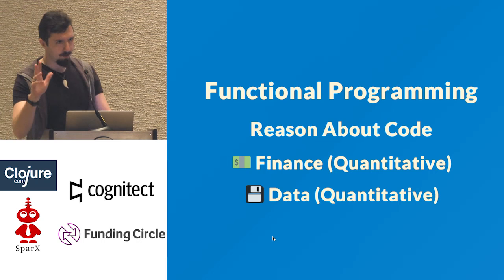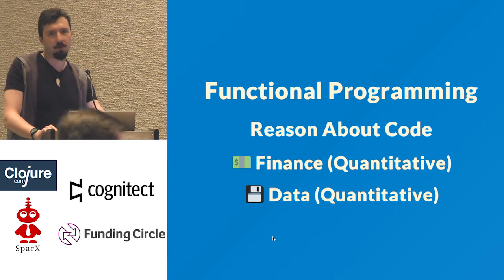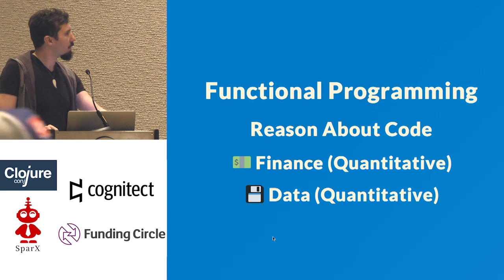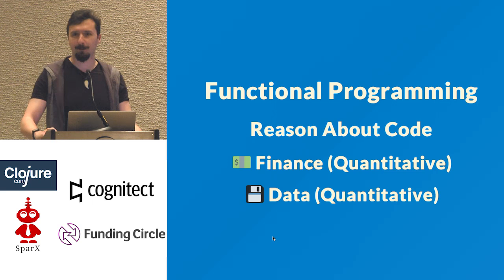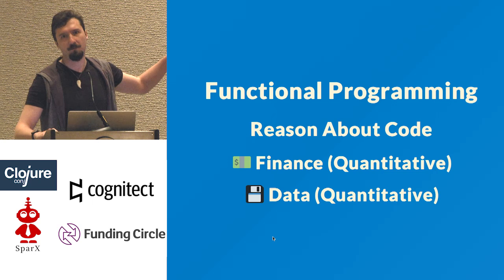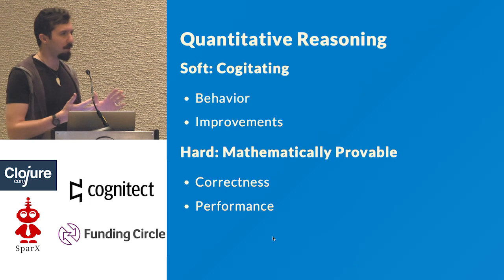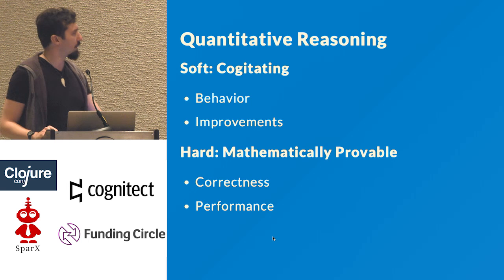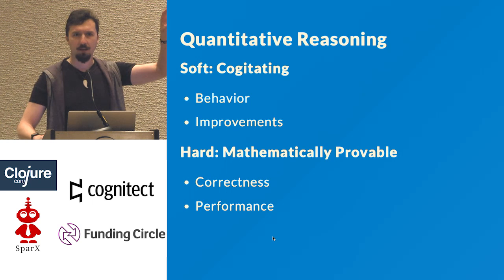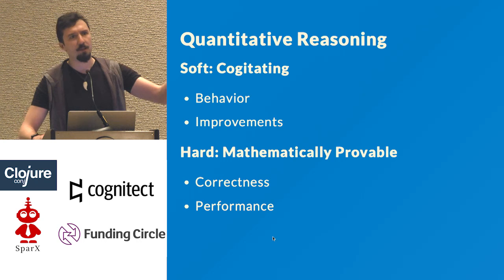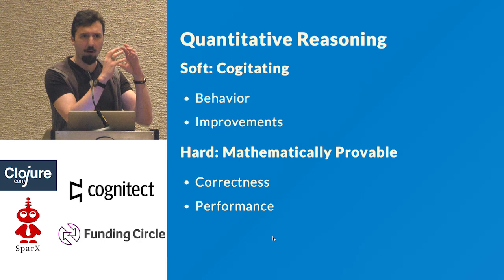I'm guessing that you're here because you enjoy functional programming, and there is a myriad of reasons why you enjoy functional programming. One of the things proselytized about functional programming is the fact that it helps you reason about code. We see this in the domains of finance and data processing, where you're working with quantitative information. Quantitative reasoning works really well in functional programming because it's easy to cogitate about — you can look at a function and really get why it behaves. And when you understand this behavior, it's easier to see how to improve it.